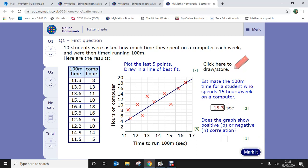Does the graph show positive or negative correlation? Positive goes up. This graph does go up, so we're going to say it shows a positive correlation. Click mark it.